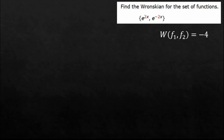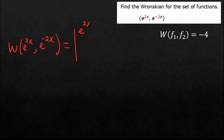Let's see. For this first problem, it says find the Wronskian for the set of functions. We compute the Wronskian of the two functions. Remember that the Wronskian is a determinant. So we list the first function. If we have two functions, that is n equals two, then we're only taking n minus one derivative — just one derivative. We take the derivative and get 2e^(2x), and then this second function and its derivative, negative 2e^(-2x).